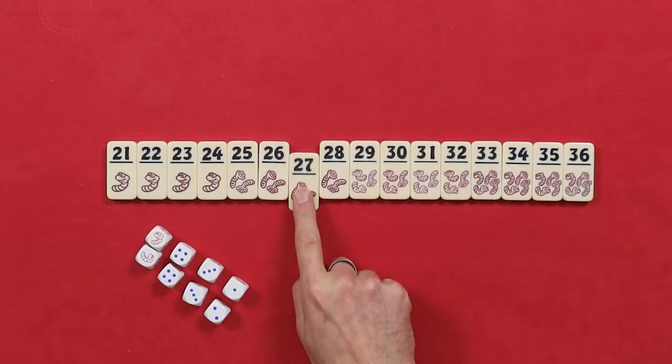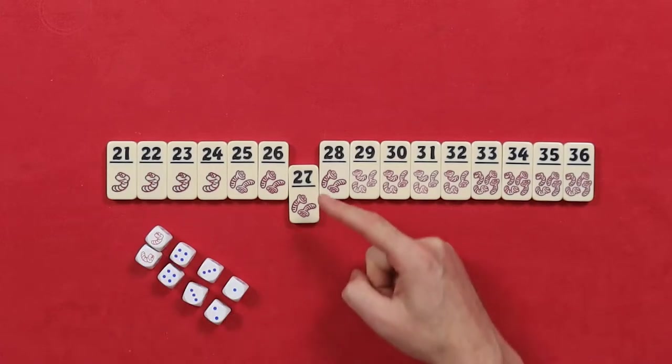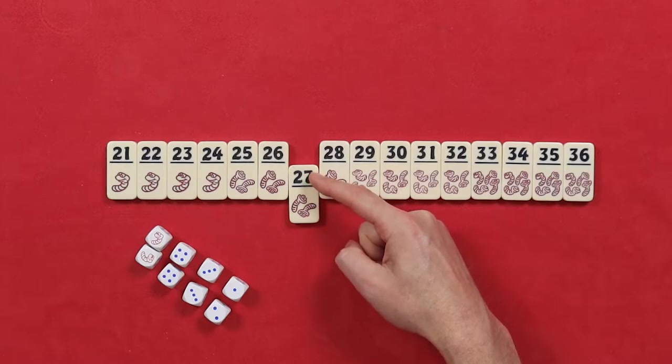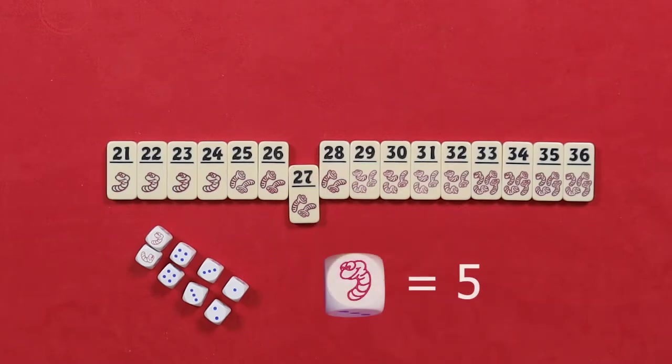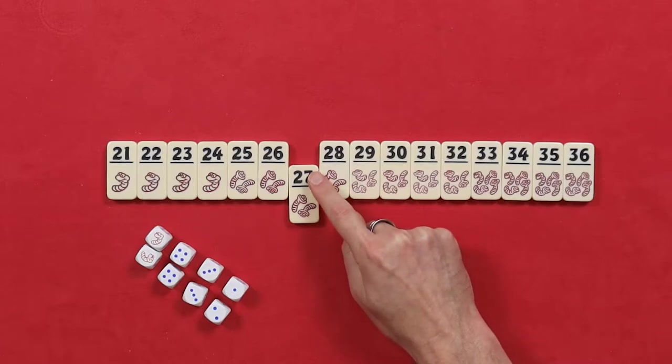To take a tile, like this one for example, the total number on all dice at the end of your turn must add up to the number on that tile. Note that worms equal a 5. Remember, your score at the end of the game is the worms on your tiles, not the numbers.